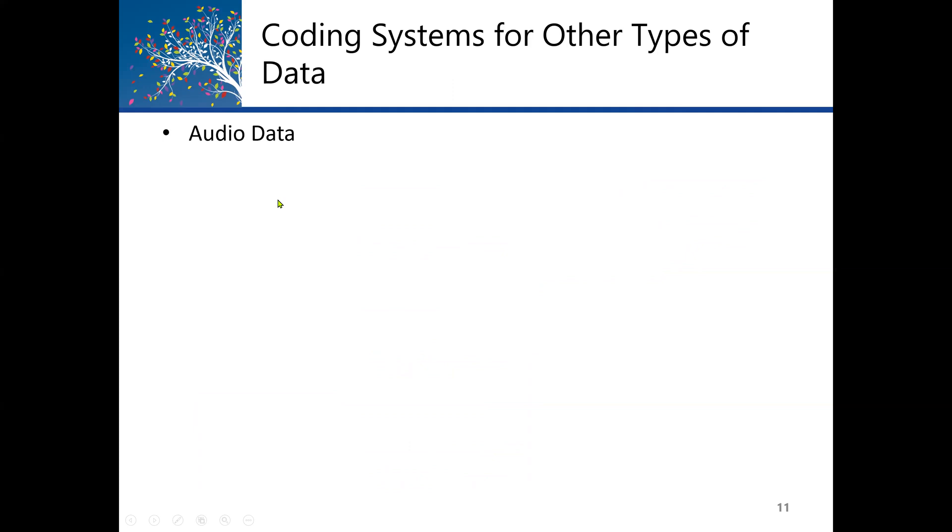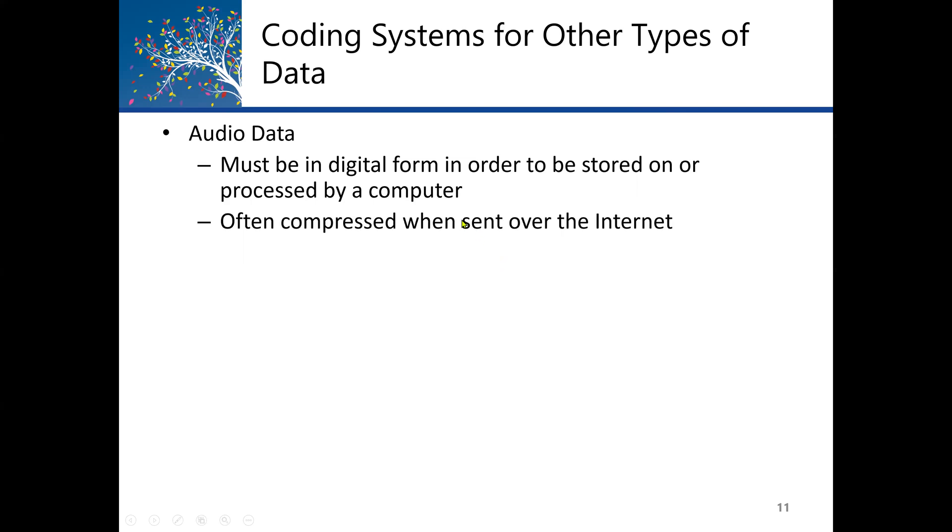We can also represent audio data in a computer system. Audio data must be in a digital form. Most audio data are analog. But in computer systems, everything must be in digital form, whether it's graphic, audio, or text, etc. It must be in a digital form in order to be stored on or processed by a computer. Any different types of data, in order for a CPU or the computer processor to process the data, the data must be in digital form, binary or machine language form.